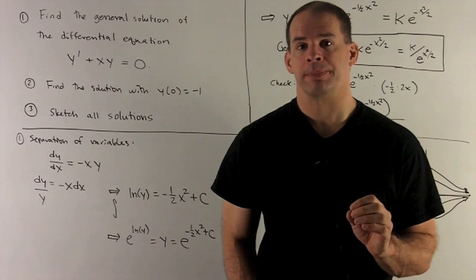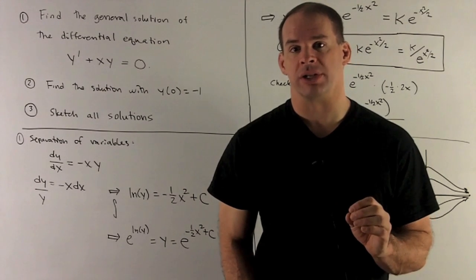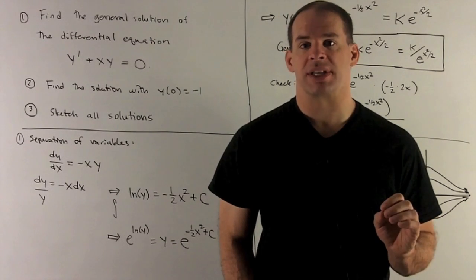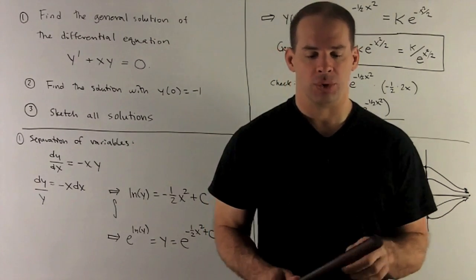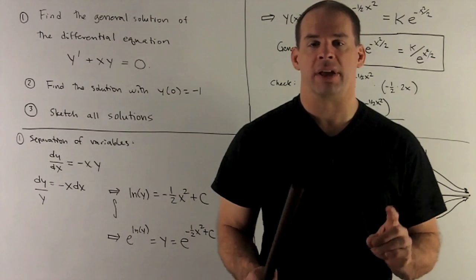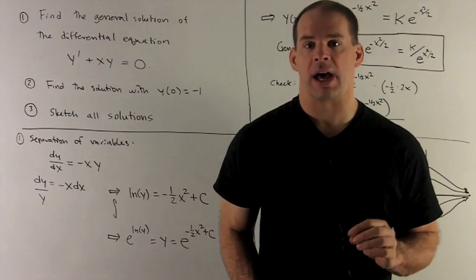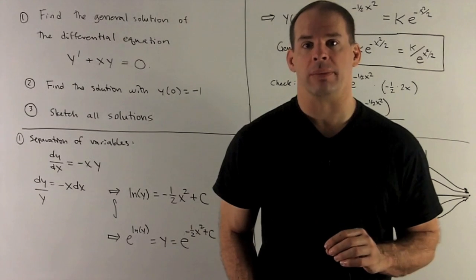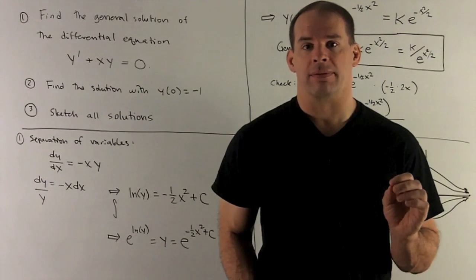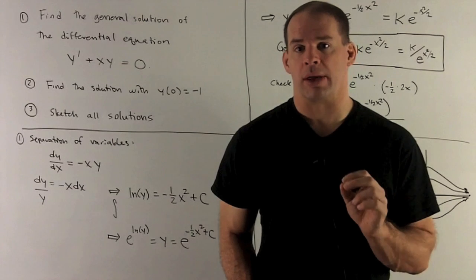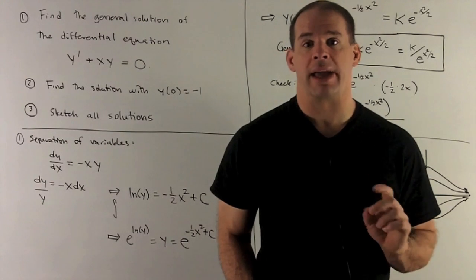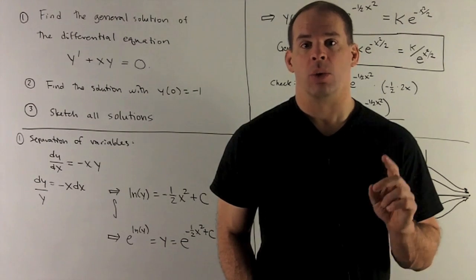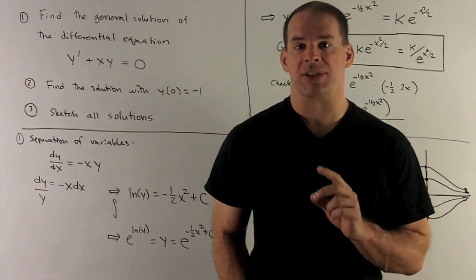To find the general solution, we're going to use the method of separation of variables. The idea is we move all the x stuff to one side and all the y stuff to the other. So I have y prime plus xy equals zero; I'll move the xy to the right side, divide both sides by y, and that gives me y prime over y equals minus x.